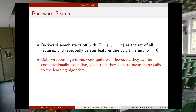Both wrapper methods work quite well; however, they can be computationally expensive because they need to make many calls to the learning algorithm. For example, if you are training a polynomial of degree five, you will need to train it as many times as needed as you try different subsets of features.